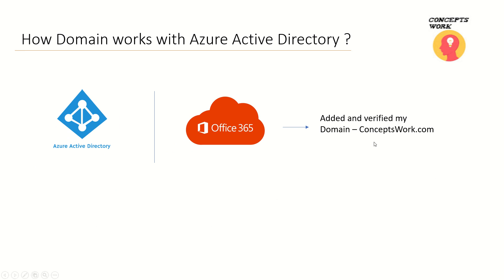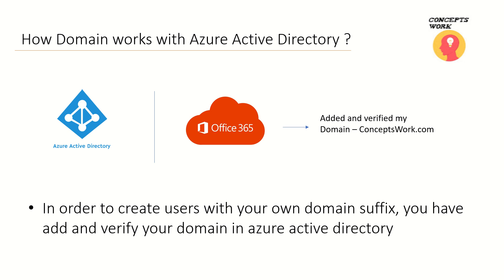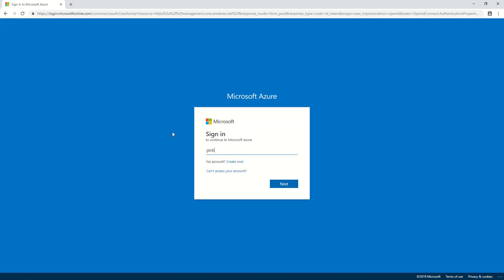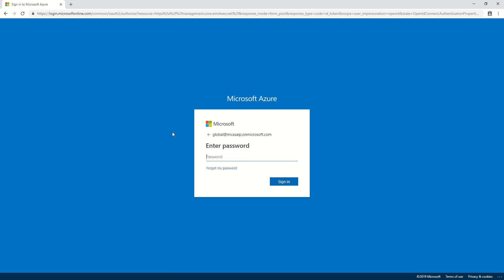For this demo, I have already added and verified my domain conceptswork.com. To create a user with your own domain suffix in the UPN, you must add and verify your domain in Azure Active Directory. Let me show you this on the portal — I'll switch to my browser, go to portal.azure.com, and open my Azure Active Directory for the tenant mkcip.onmicrosoft.com.